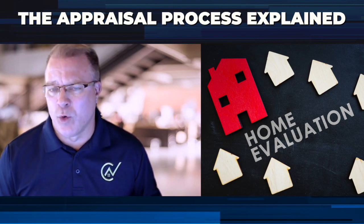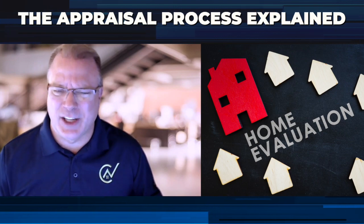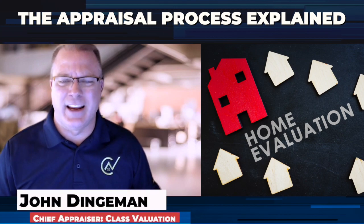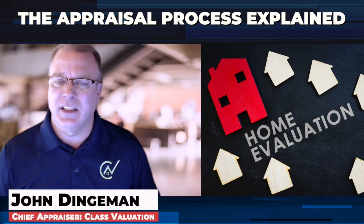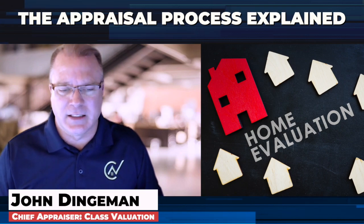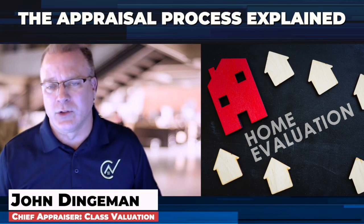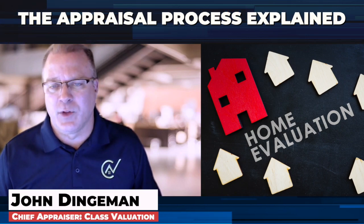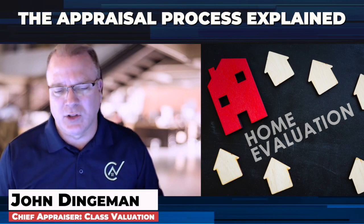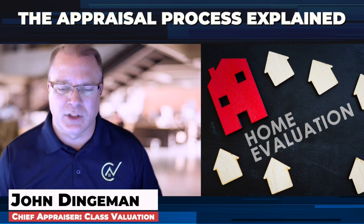Complexity comes in all forms. Complexity isn't just those giant jumbo loans in the giant houses. Complexity could be a very simple 600 square foot, one bedroom, one bath house, if there's an absence of comparables. So the appraiser is going to look up that kind of information and determine if they can proceed.